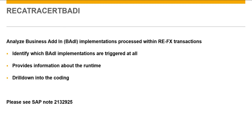See SAP Note 213-2925 for further documentation. A simple example should help to illustrate how to use this tool. Imagine there is a strange error message raised when processing contracts of a certain type. One suspects it might be related to some custom code, but which BADI implementations are triggered is unknown, and how they might influence this issue is uncertain.